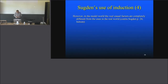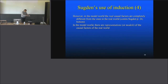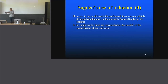What I claim here is that in the model world, the real causal factors are completely different from the ones in the real world — this is just absolutely, unhealably false. In the model world, there are representations or models of the causal factors in the real world. What you do in the model when you say that weak racial preferences produce segregation — these are the racial preferences there, it's just the constellations of these chips. It's something very different from the constellations when you have real human beings with intentions and preferences. So one is a representation of the other.